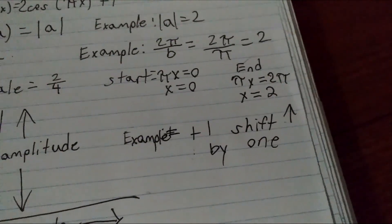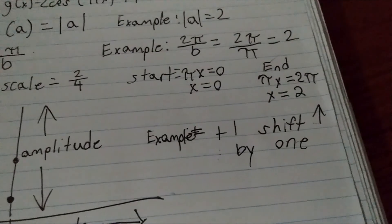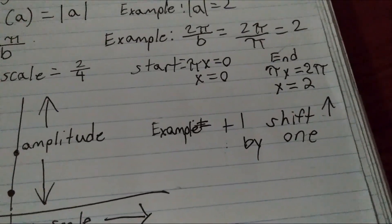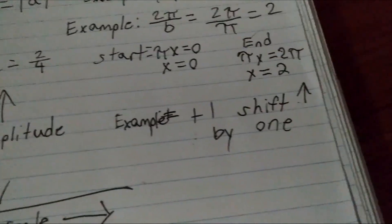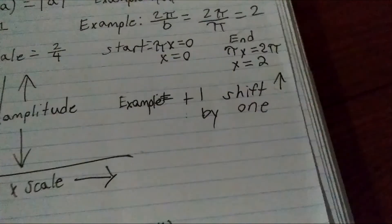The start will be pi x equals 0, which means x equals 0. So, at the end point, we have pi x equals 2 pi, or x equals 2.